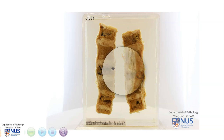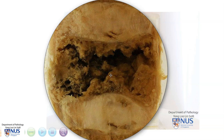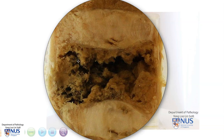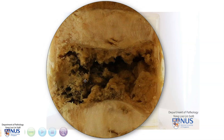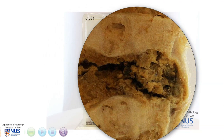Taking a closer look, the bony substance of the vertebral body appears to be destroyed, and as a result, the bone looks very friable. In some areas, there appears to be a slightly more fleshy appearance, as you can see here.